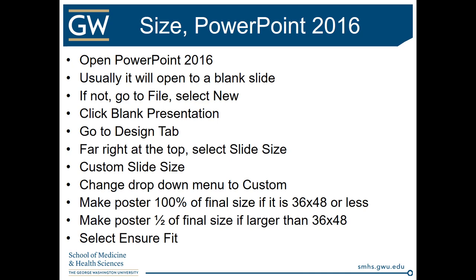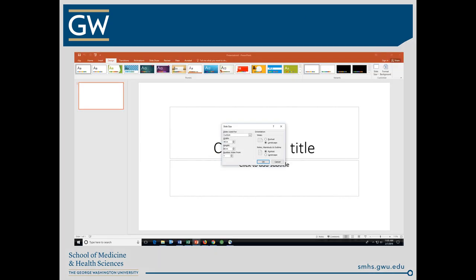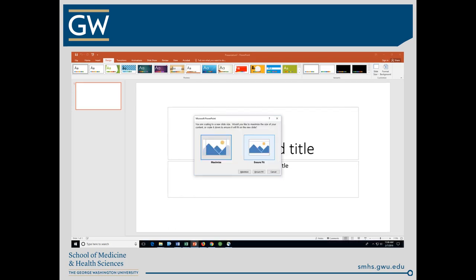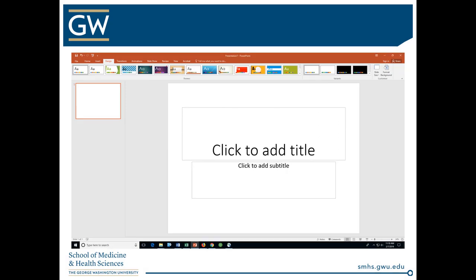You're going to see a dialog box where you select Ensure Fit — this is new in this updated version of PowerPoint. Here you can see that up at the top we've gone to the Design tab, then way over to the far right on that top toolbar you'll see Slide Size. We chose Custom Slide, changed the drop-down to Custom, set the width for 48 inches and the height for 36. Once you hit OK, you'll see a dialog box pop up — choose Ensure Fit so everything is scaled to fit into your slide, and it will change to your 48 by 36 size and you're ready to begin.